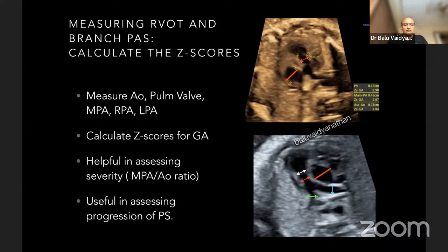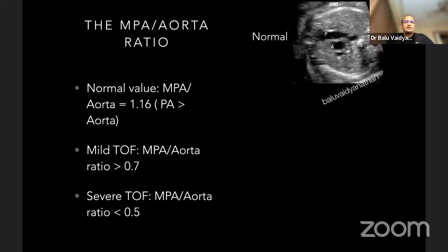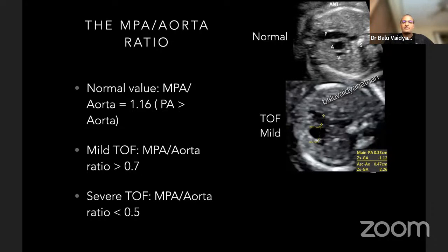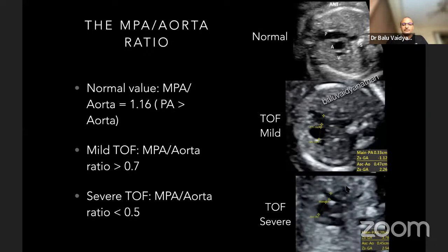In a normal heart, the PA to aorta ratio is about 1.16, meaning the PA is larger than the aorta. Mild forms of tetralogy typically have a PA to aorta ratio of about 0.7 or more. The PA Z-score of minus 1.1 is small but not very small. While in very severe forms, the pulmonary artery is very diminutive — PA Z-score of minus 3.76 and a PA to aorta ratio of less than 0.5. That is severe stenosis, and often the patient will be very cyanotic at the time of birth.